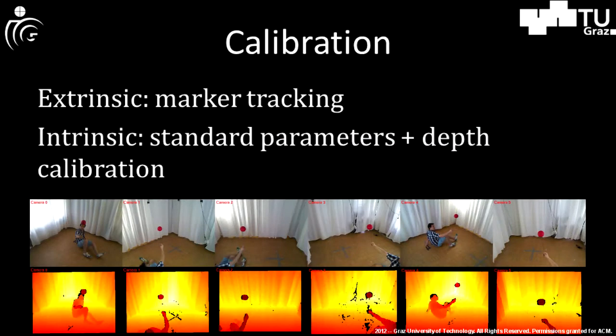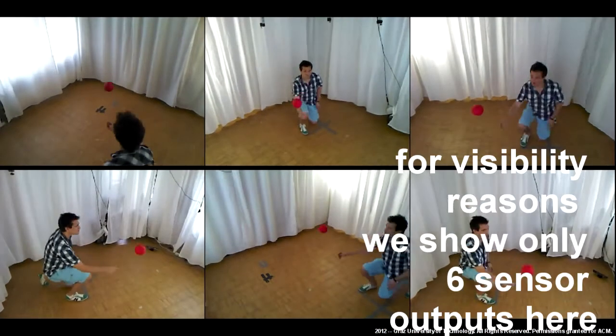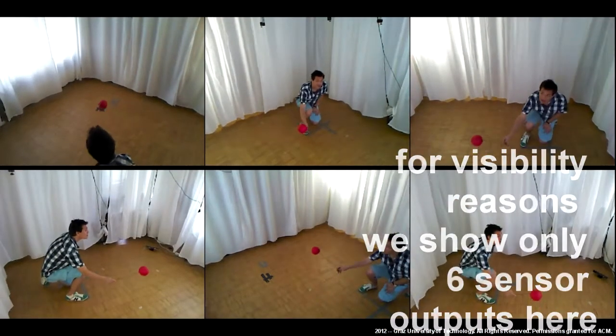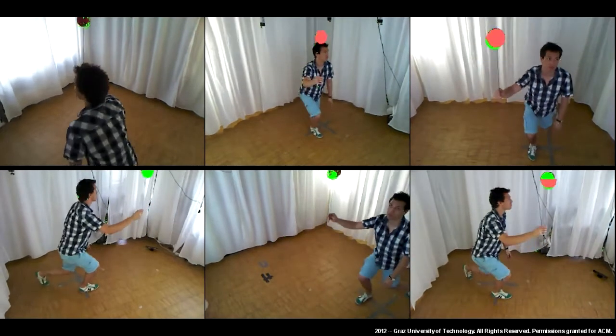Second, we can additionally refine the depth measurements of the different Kinects. Therefore, we create a calibration sequence using a defined red sphere. Here, the green color means uncertain sphere regions.